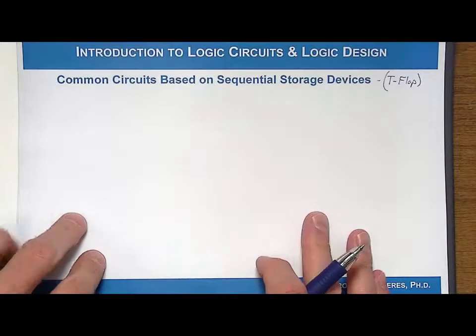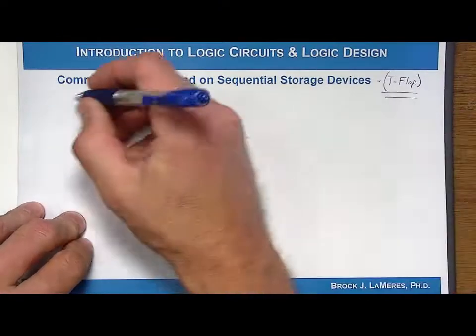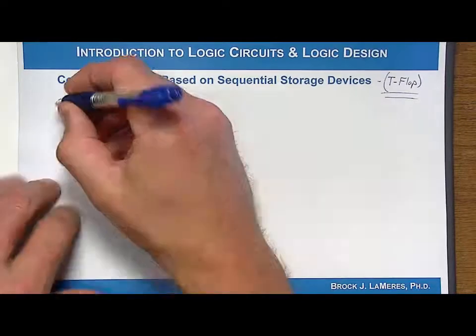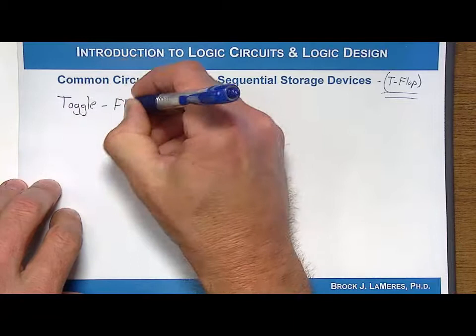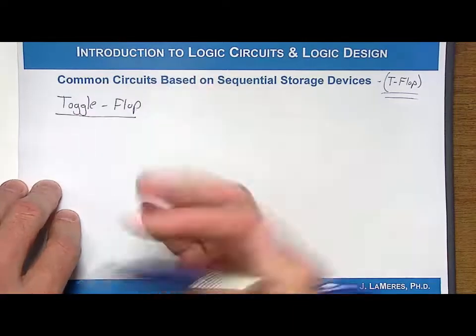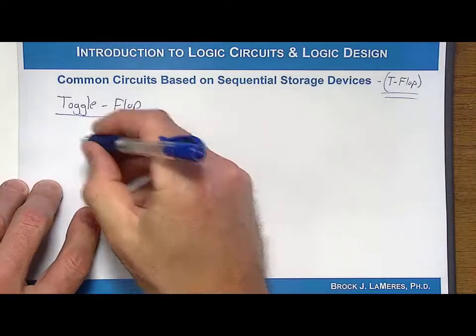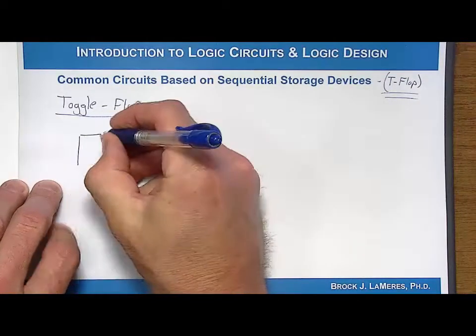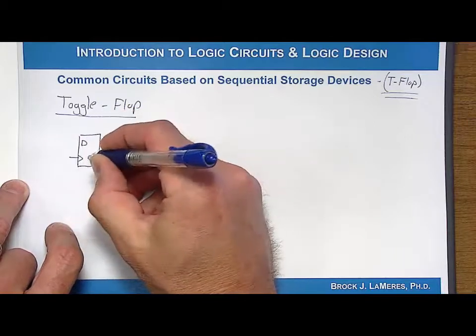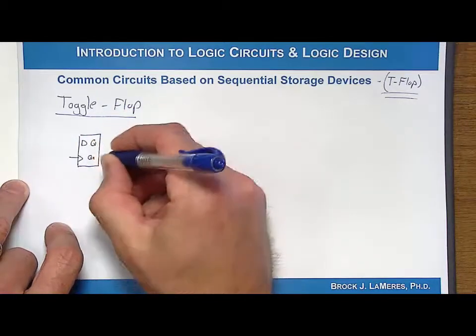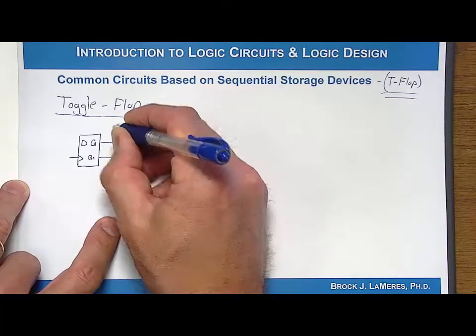And what we're talking about is primarily the D flip-flop. So let's take a look at a circuit that is known as a toggle flop. The toggle flop is when you take a D flip-flop and you take the Q bar output, or Q naught, and you route it back to the D input.